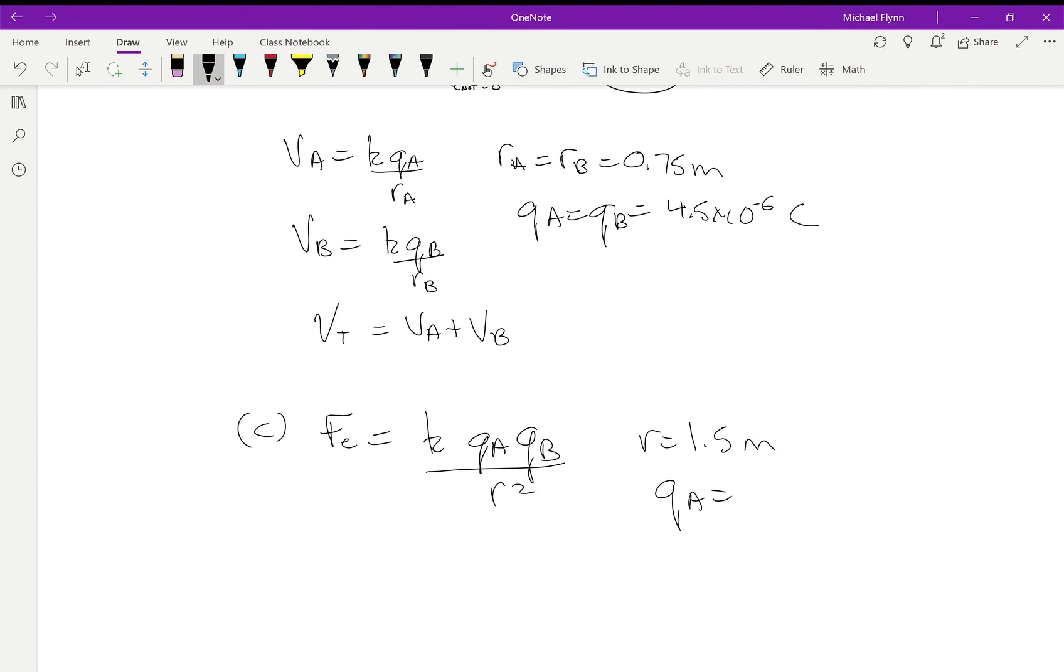r hasn't changed—r is still 1.5—but q_A has changed. q_A was negative 3 times—sorry, don't put the negative sign—it's 3 times 4.5 times 10 to the negative 6, because it's negative 3q. And q_B would be 5 times 4.5 times 10 to the negative 6. Now this will be an attractive force between them.